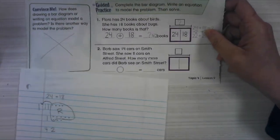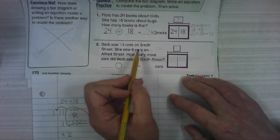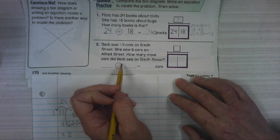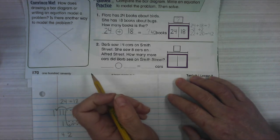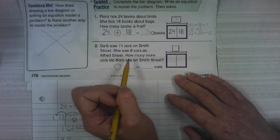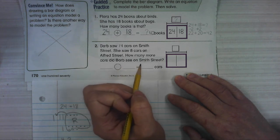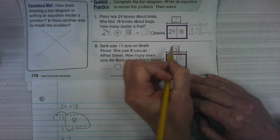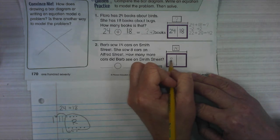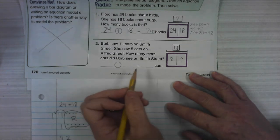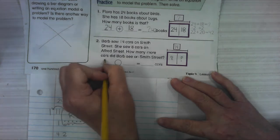Alright, let's do number two now. Barb saw 14 cars on Smith Street. She saw eight cars on Alfred Street. How many more cars did Barb see on Smith Street? Okay, here we're not going to add. We're comparing here. We're comparing the number of cars she saw on Smith Street to the number of cars she saw on Alfred Street. When we compare, we're going to subtract to find what's different. So Smith Street had 14 cars. Alfred Street had eight cars. How many more would it need to have the same as Smith Street is what comparing questions are asking. So we are going to subtract.